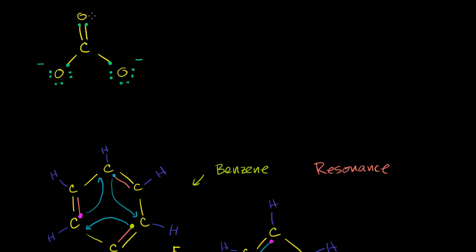Maybe one of these electrons from the neutral oxygen can be given to the carbon, and then the carbon would lose an electron to the oxygen on top — it all happens simultaneously. The carbon releases this electron and it goes back up to that oxygen. So what's that going to look like if that were to happen?